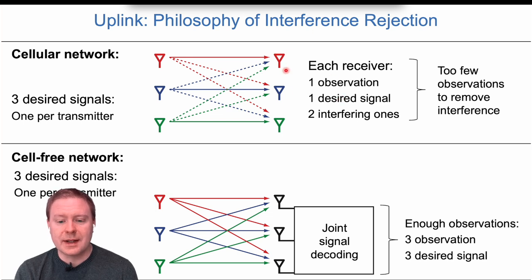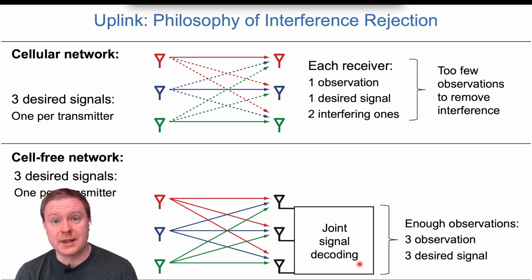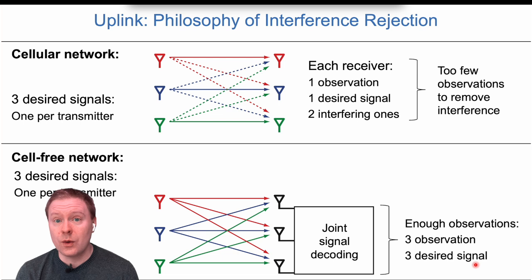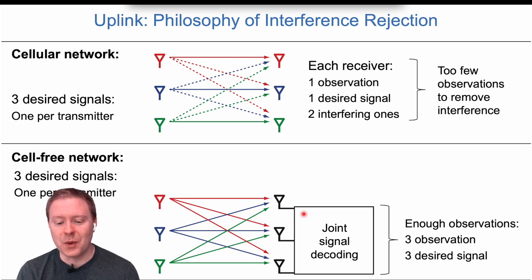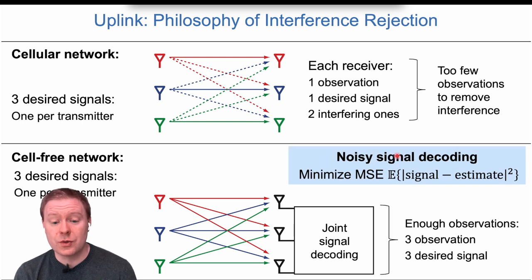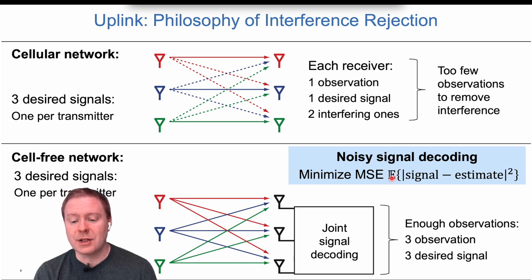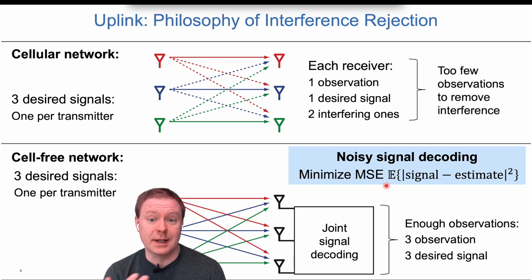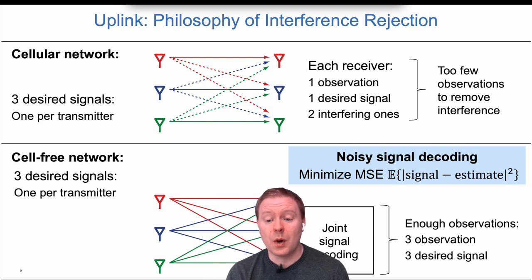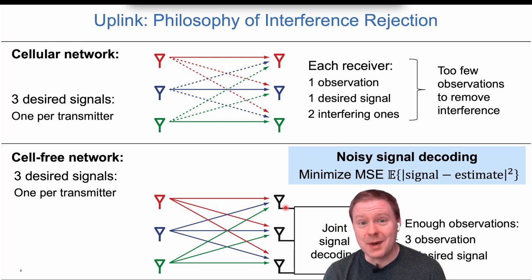The only ways to deal with interference in a single-antenna cell are to let users take turns (inefficient) or let them interfere (also inefficient). In a cell-free network, the three access points connect together for joint signal decoding, sharing received signals via the CPU. Now there are three observations and three user signals to decode — in the absence of noise, three equations with three unknowns, so all signals can be distinguished. In practice, noisy signal decoding minimizes mean squared error, a classical approach for finding the most likely transmitted signals.